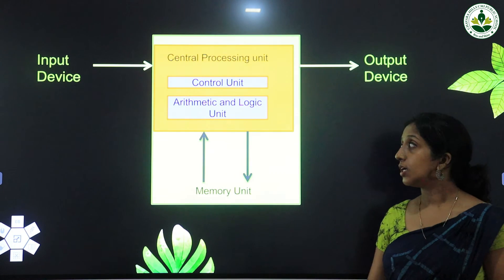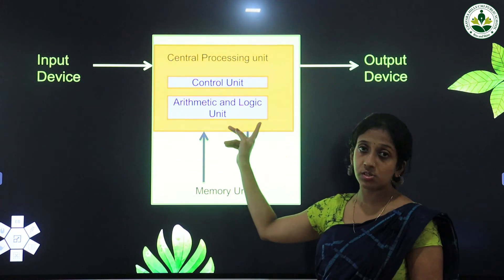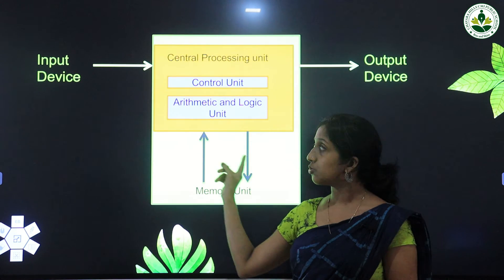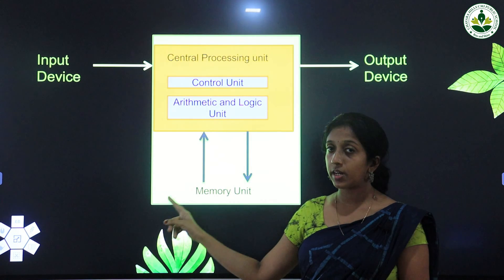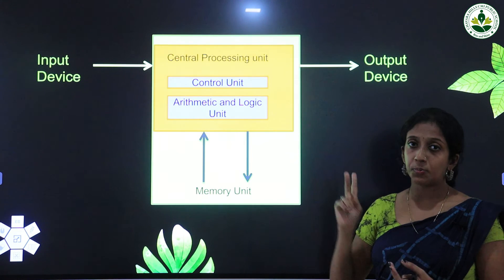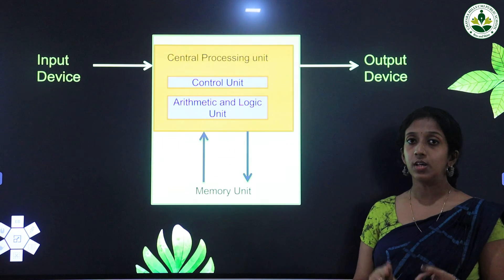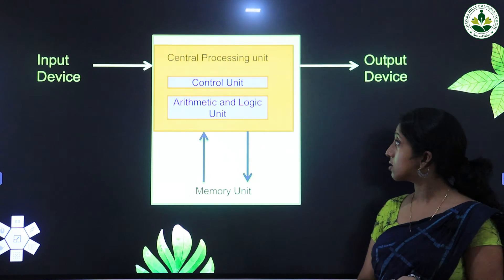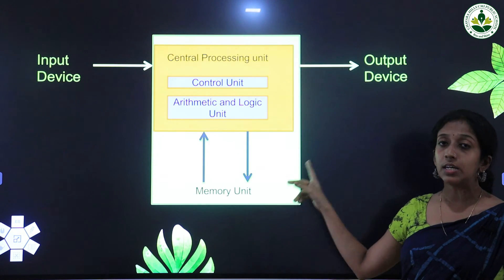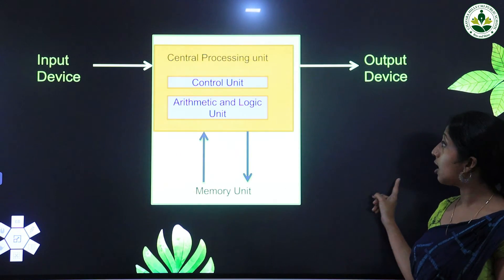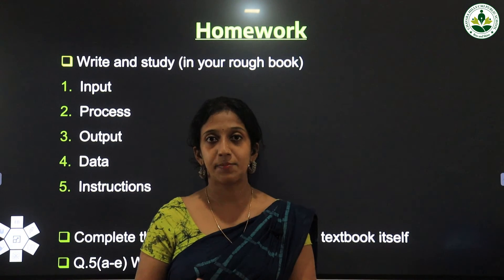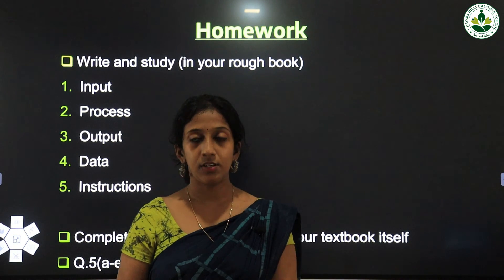Today we have learned about the parts of a CPU — that is the Arithmetic and Logic Unit and the Control Unit. The inputs are given to the CPU by using input devices, processing is done inside the CPU, and after the processing the outputs are given by using output devices.